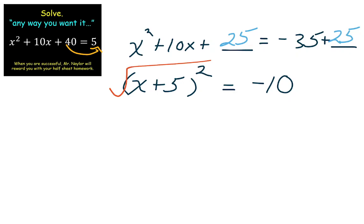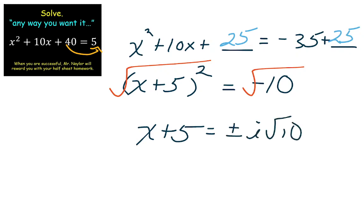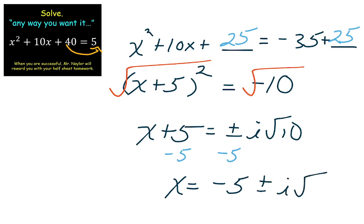Once you complete the square, you're basically one square root away from the final answer. Take the square root of both sides, getting plus or minus i root 10. Then subtract 5 from both sides — that 5 just gets moved out of the way, giving the final answer negative 5 plus or minus i root 10. Pretty cool — we completed the square.